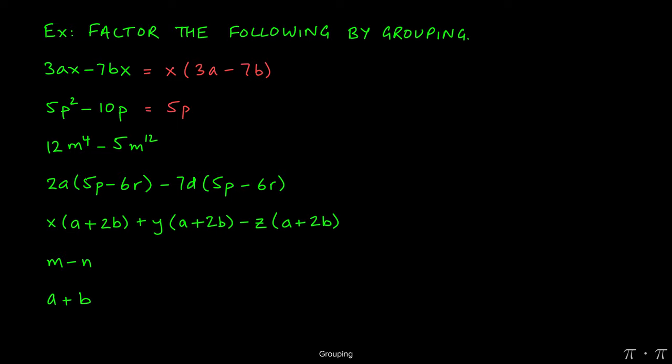How do we know what goes inside the parentheses? We divide the terms by the GCF. 5P squared divided by 5P will give us just P, and negative 10P divided by 5P will give us negative 2. Because there are no more terms, we close parentheses, and that's it.